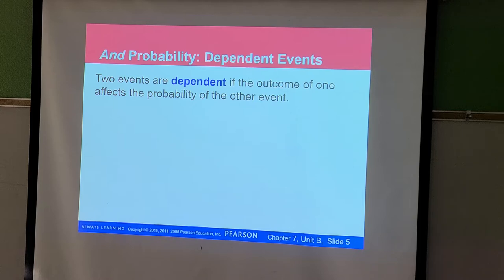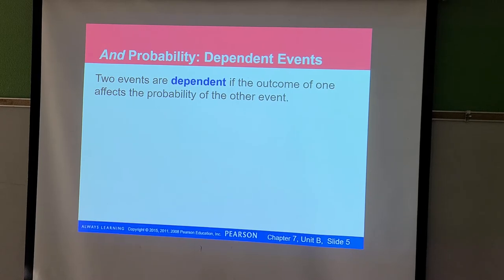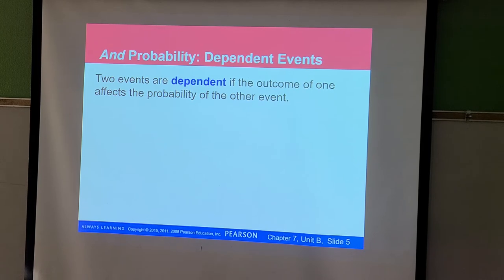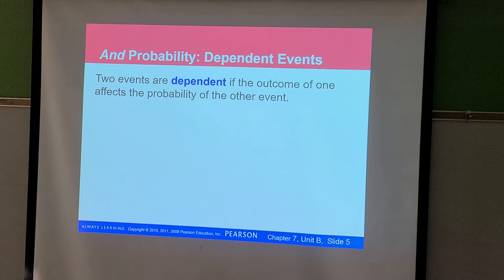Now, what if the events are dependent upon each other? Two events are dependent if the outcome of one affects the probability of the other. We're still using the AND probability — multiplication — except there's a slight change in the second probability when we have dependent events.